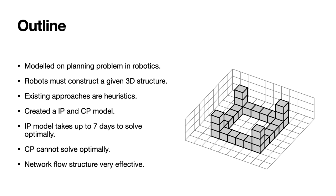Presently all of the existing approaches are based on heuristics, and the state of the art is based on a multi-agent reinforcement learning approach. So we tried to study this problem using exact methods. We constructed an integer programming model and a constraint programming model to solve this problem. Our integer programming model is based on a network flow, and our CP model is also based on a different type of network flow, although we did try sequencing CP models in the past.